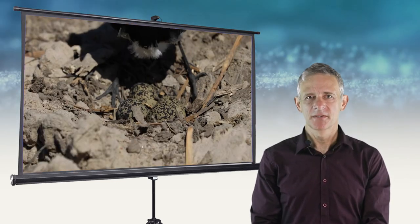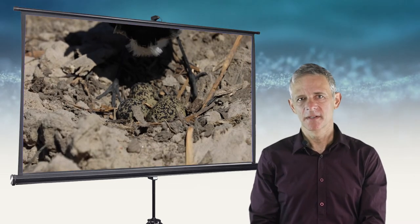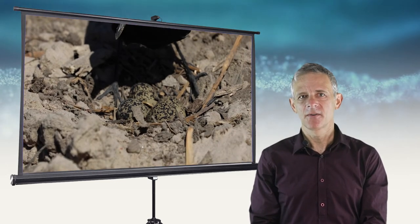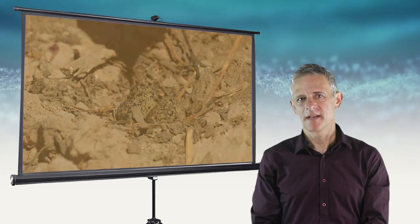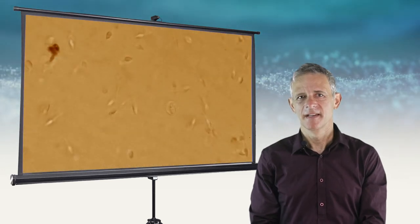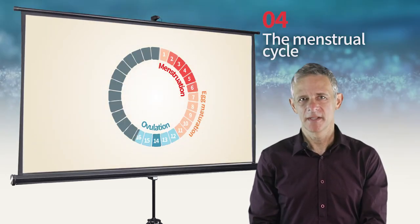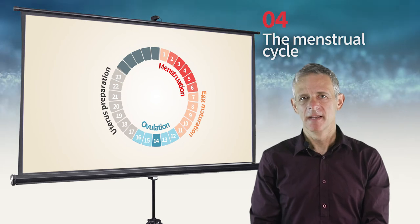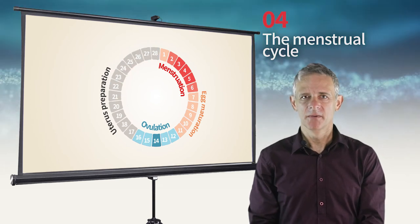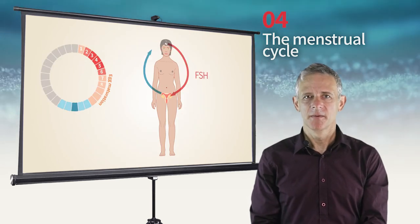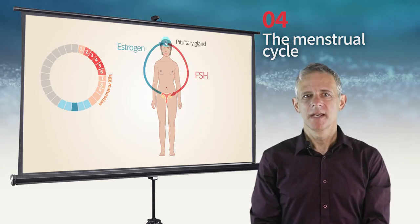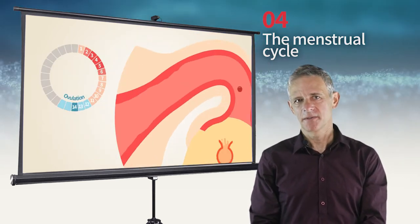Both egg production and spermatogenesis are highly complex and specialized. The fourth video will deal with the human female menstrual cycle, with its hormonal regulation, with ovulation and with egg maturation.